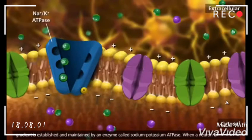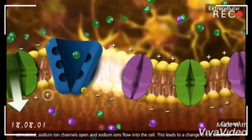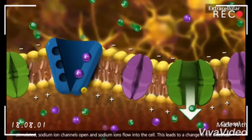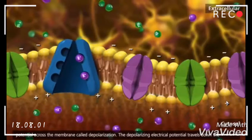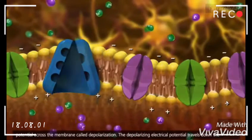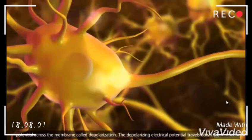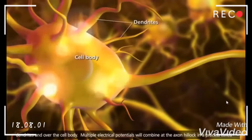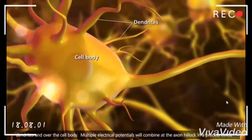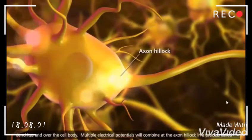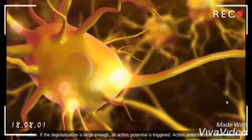When a neuron is stimulated, sodium ion channels open and sodium ions flow into the cell. This leads to a change in the electrical potential across the membrane called depolarization. The depolarizing electrical potential travels down the dendrite and over the cell body. Multiple electrical potentials will combine at the axon hillock in a process called summation.